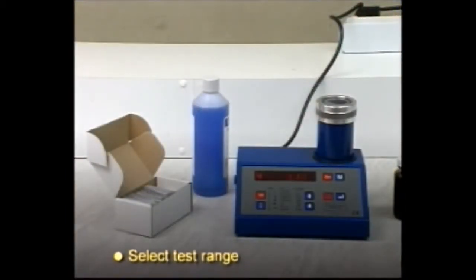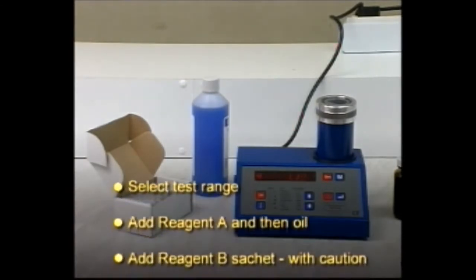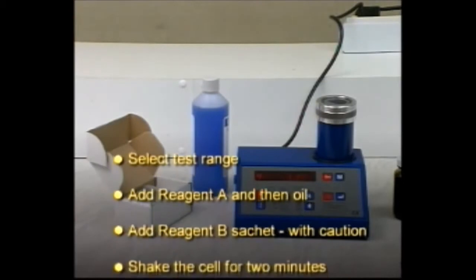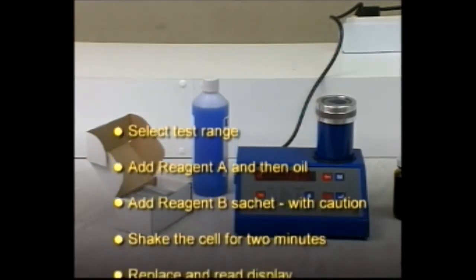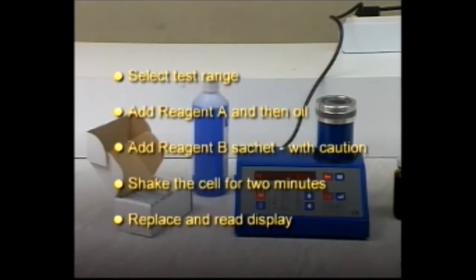To summarize: select test range, add reagent A and then oil, add reagent B sachet with caution, shake the cell for 2 minutes, replace and read display.